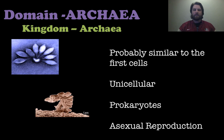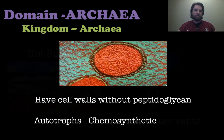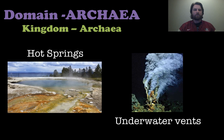The first domain, archaea, has a kingdom within it also called archaea. These are probably similar to the very first cells that formed on Earth. They are all unicellular, all prokaryotes, and they all reproduce asexually. Their cell walls do not have peptidoglycan. They are autotrophs, meaning they make their own energy, and the way they do that is through chemosynthesis. You're going to find most of these archaea in hot springs or underwater hydrothermal vents — they really thrive in harsh environments.